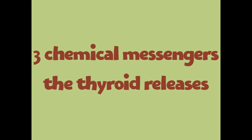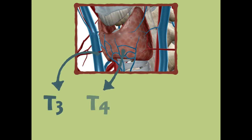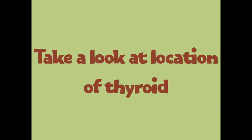As we look at the location of the thyroid, I want to highlight the three main chemical messengers we're going to discuss. The first is T3, the second is T4, and the third is calcitonin. These are the three hormones we'll be covering in this lecture.